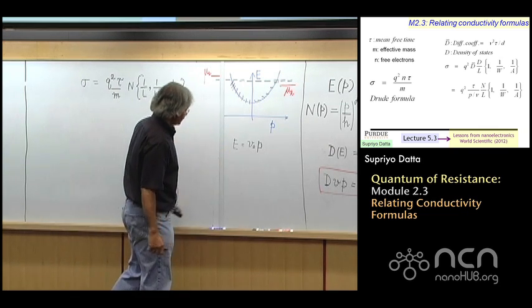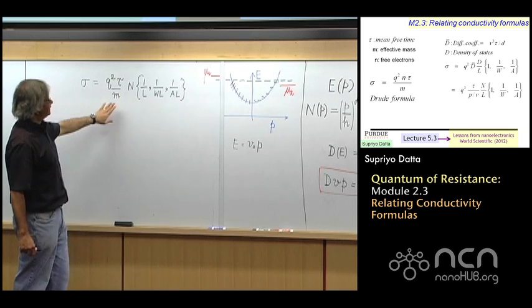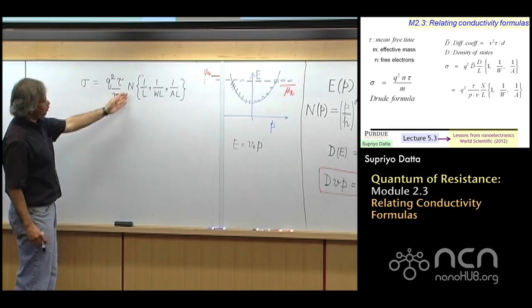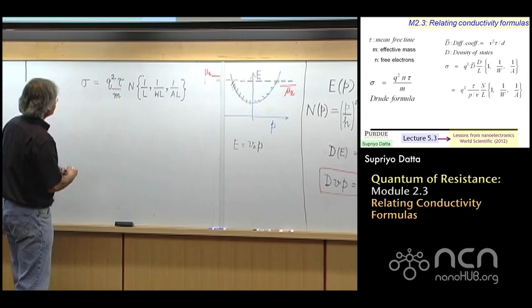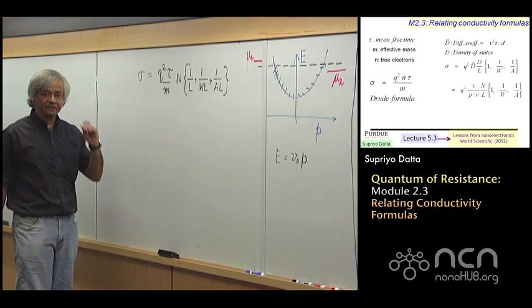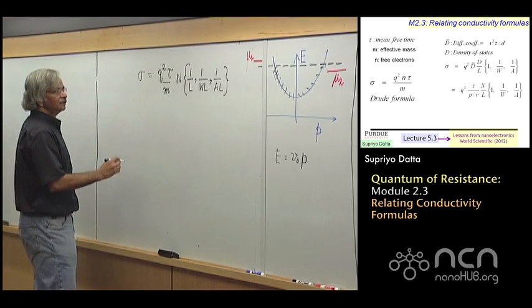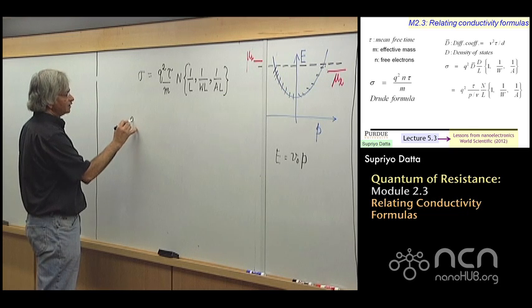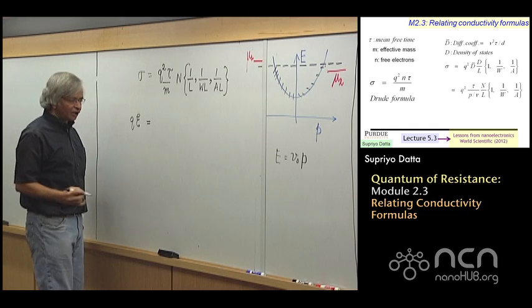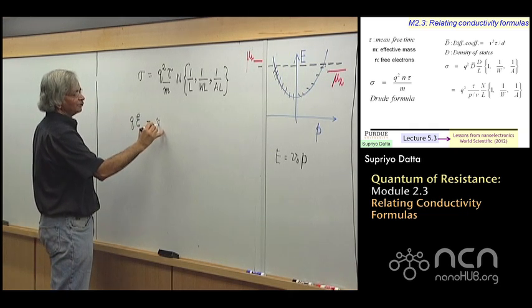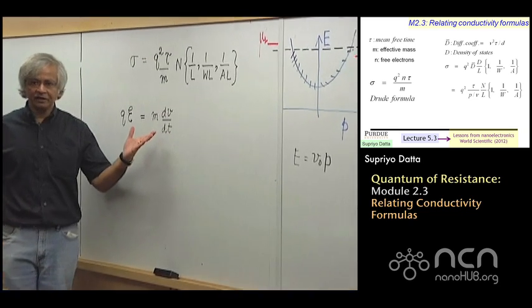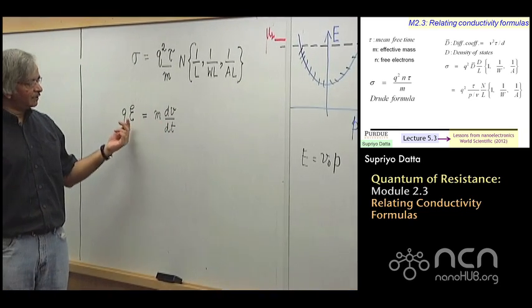Let me just quickly outline how people obtain this result. And the argument, let's just do it in 1D for simplicity. That usually the argument goes that electrons are driven by electric fields. And so the force that an electron fields is QE. And according to Newton's laws, QE should be equal to m dV dt.